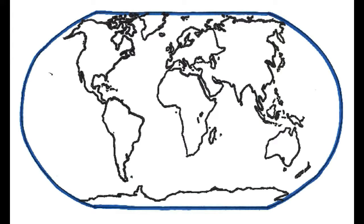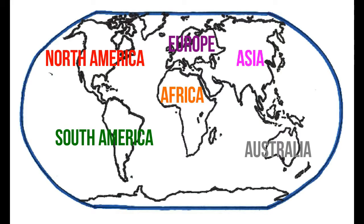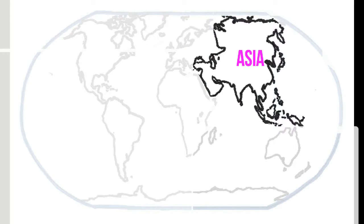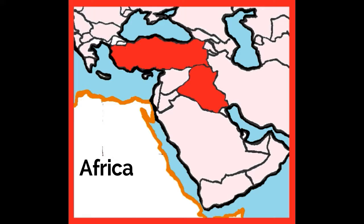As you know, there are seven continents, and they are North America, South America, Africa, Europe, Asia, Australia, and Antarctica. For the purpose of this video, we're going to zoom in on Asia. Let's focus on that red box and zoom in just a little bit more. The two places that we're going to be talking about are Iraq and Turkey, and they are both located in Asia.